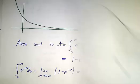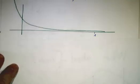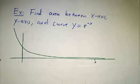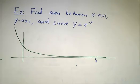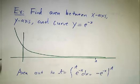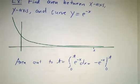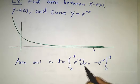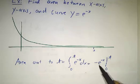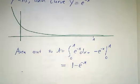Let's do an example. We want to find the area between the x-axis, the y-axis, and the curve y equals e to the minus x. The first step is we figure out the area out to t: that's the integral from 0 to t of e to the minus x dx. We can do that with the fundamental theorem of calculus. The antiderivative of e to the minus x is minus e to the minus x. Plugging in at t and at 0, we get 1 minus e to the minus t.